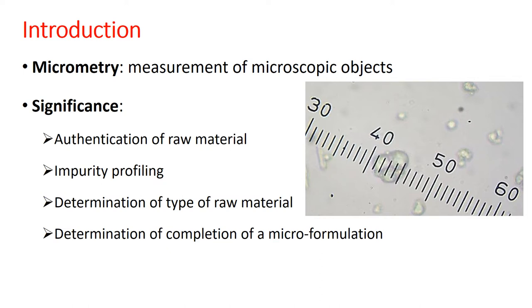The importance of this practical is in authentication of raw material — to determine whether the raw material provided is pure or has been adulterated. It also helps in impurity profiling: due to the presence of certain impurities, under the microscope these impurities can be easily visible and distinguishable compared to the authentic crude drug.